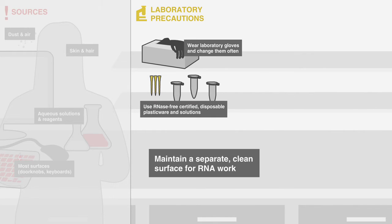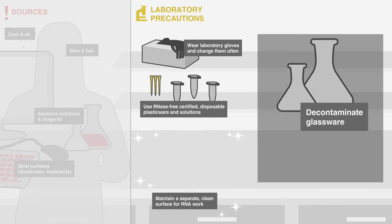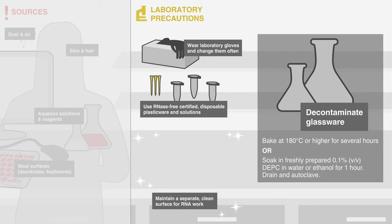Maintain a separate area for RNA work and carefully clean the surfaces. Decontaminate glassware by baking at 180 degrees Celsius or higher for several hours, or by soaking in freshly prepared 0.1% DEPC water or ethanol for one hour, followed by draining and autoclaving.